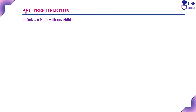AVL tree is a height-balanced binary search tree, and we can perform both insertion and deletion in an AVL tree. Whenever we insert a new node or delete a node from the AVL tree, the tree may become unbalanced. The balance factor of a balanced tree is 0, +1, or -1. If it is +2 or -2, the tree is unbalanced, and we must convert it back to a balanced one.